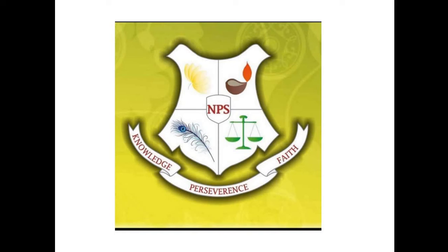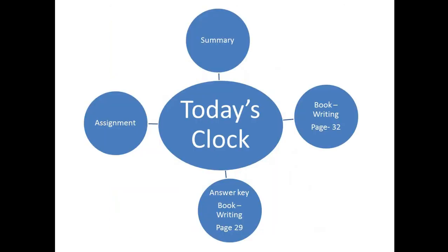Welcome to English class. Let's see what we are going to do today. Here goes our today's plan. First, we are going to do from the book writing page 32 — that is picture composition, which we are going to continue. In our previous class, we were doing picture composition. Then I am going to share the answer key from book writing page 29. The assignment will be given to you, and the last will be the summary. Students, get ready with your writing book.